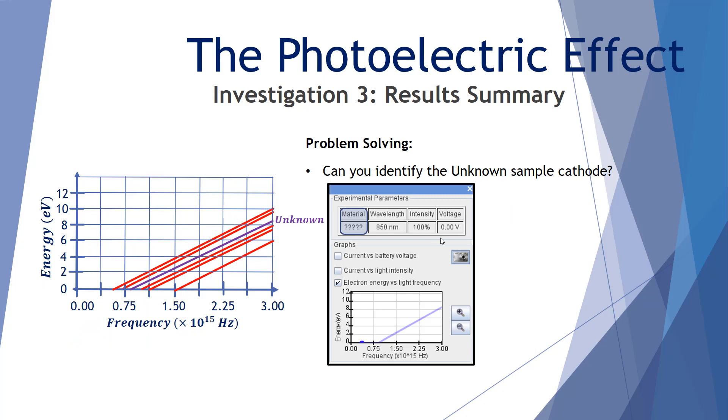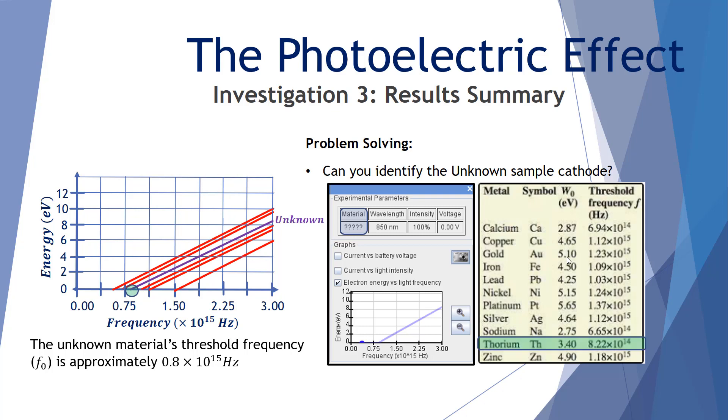A problem to have a look at. Could you identify the unknown sample that was in the FET simulator? This is its graph, and it intersects roughly around about 0.8 by 10 to the 15 hertz. The unknown material's threshold frequency is approximately 0.8 by 10 to the 15 hertz. We look up this table and we can see that thorium has a threshold frequency of roughly 8 by 10 to the 14, which is the same as 0.8 by 10 to the 15 hertz. So this unknown material could be thorium.